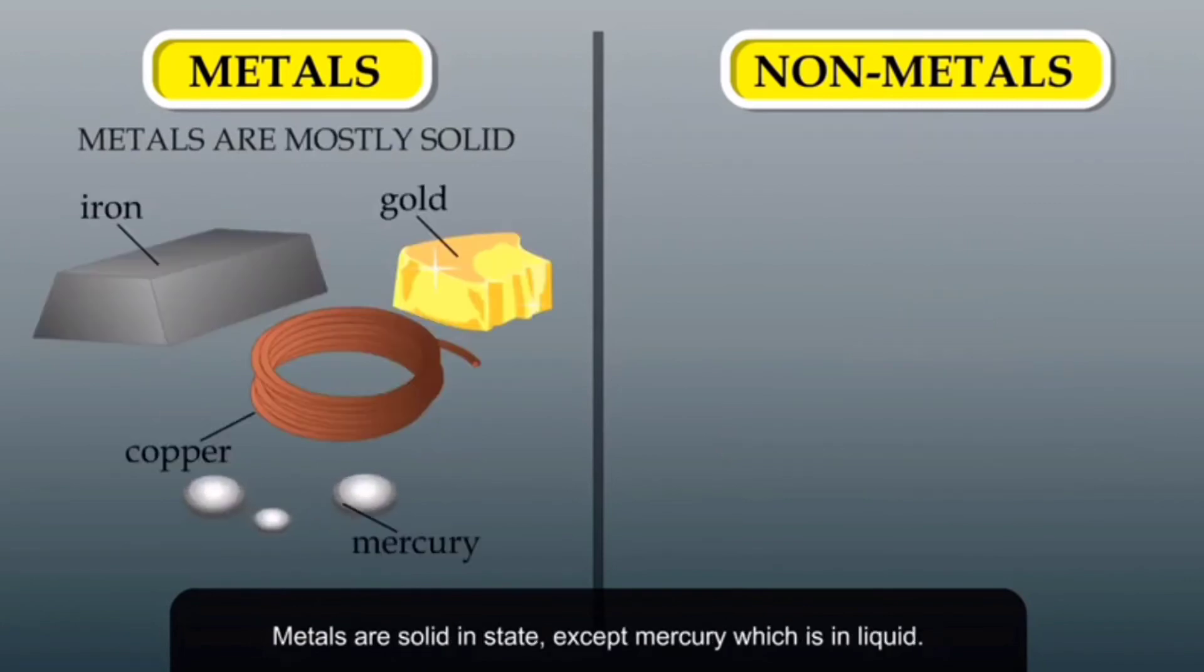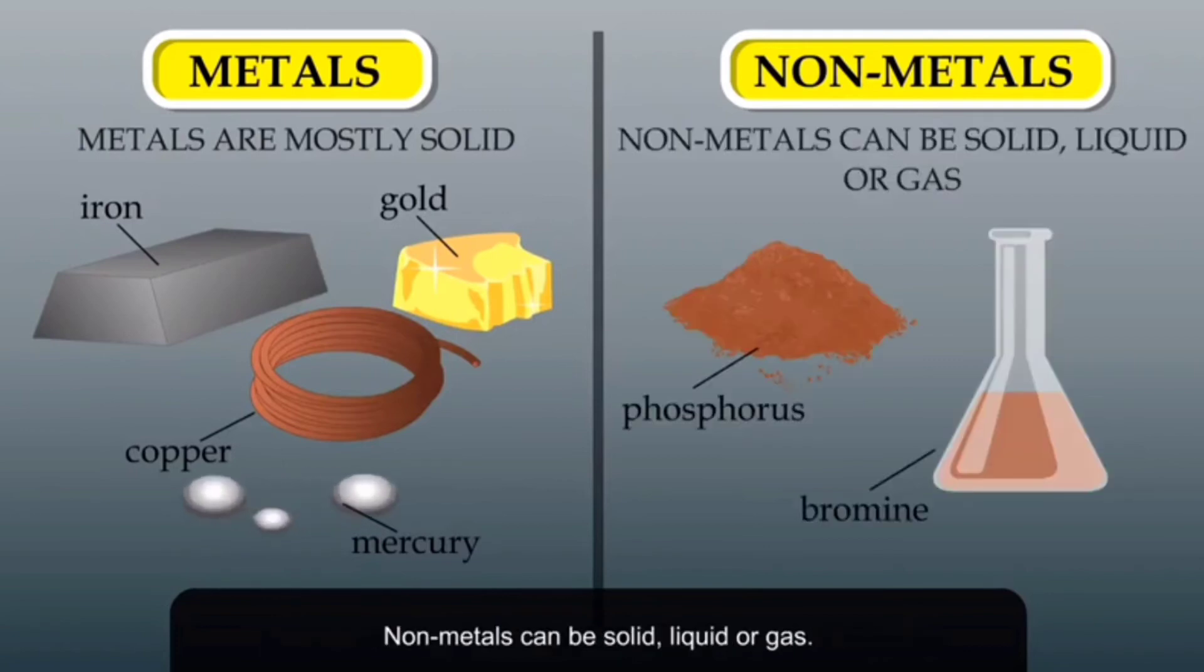Metals are solid in state, except mercury, which is in liquid state at room temperature. Non-metals can be solid, liquid, or gas. For example, phosphorus is in solid state, bromine is in liquid state, and chlorine is in gaseous state.